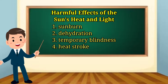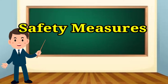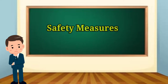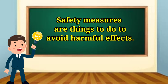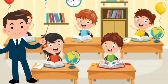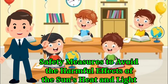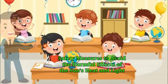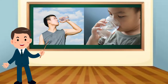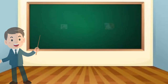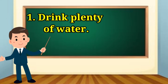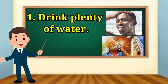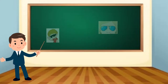Can we avoid these harmful effects of the Sun's heat and light? Yes, through safety measures! Safety measures are things to do to avoid harmful effects. Look at these pictures — what are they doing? They're drinking. Yes! Drink plenty of water. You need to drink eight or more glasses of water a day to avoid dehydration and heat stroke.